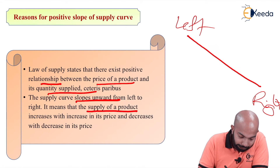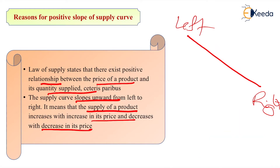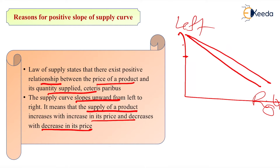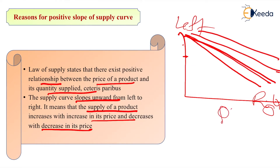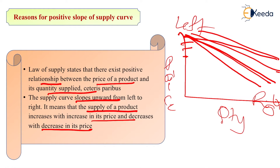It means that the supply of a product increases with an increase in its price, and decreases with a decrease in its price. Looking at the graph, if this is the price and it increases, then the supply curve will keep going upward because the quantity will keep on increasing. This is the quantity axis and this is the price axis. If the price keeps on decreasing, then the supply curve will slope downward.